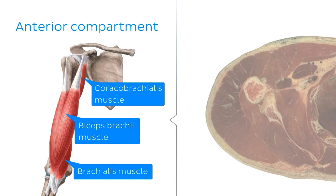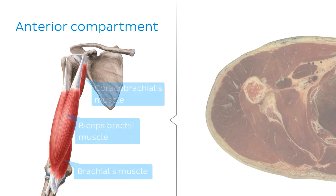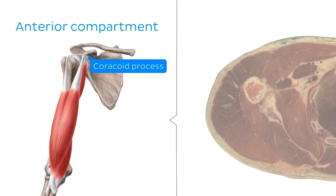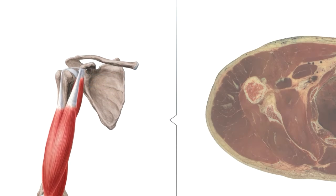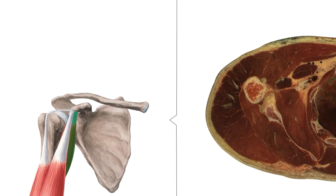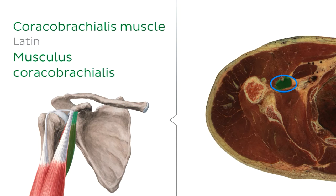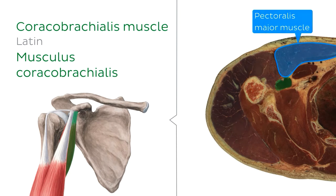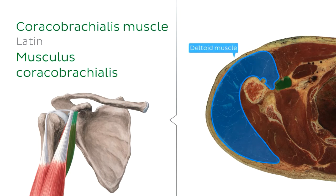Both the coracobrachialis and biceps brachii muscles originate from the scapula, from the inferior aspect of the coracoid process. With that in mind, let's now look at our cross section from the proximal portion of the arm, where we see the coracobrachialis muscle just here, deep to the pectoralis major and deltoid muscles.